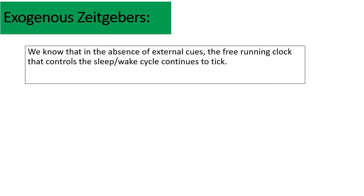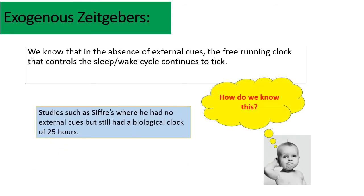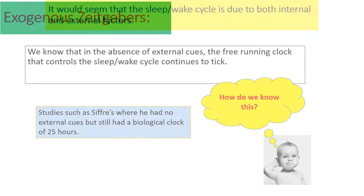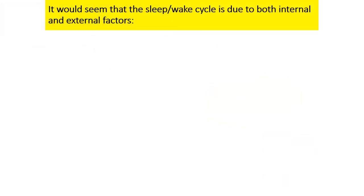Peripheral oscillators are other areas in our bodies that can access information on light and can also reset our circadian rhythm. It doesn't necessarily just have to be our SCN. From Sif's research, we know that in the absence of external cues, the free-running clock that controls the sleep-wake cycle continues to tick. When he had no external cues - no daylight, just artificial light - he still was able to have a biological clock of up to 25 hours.